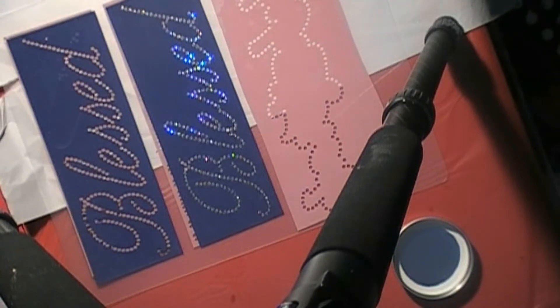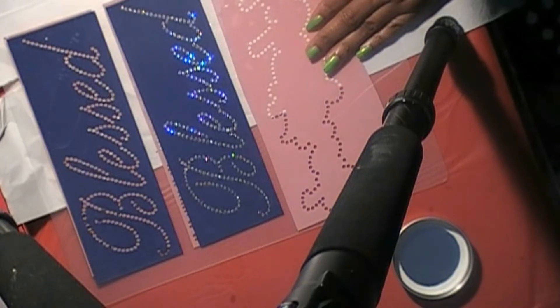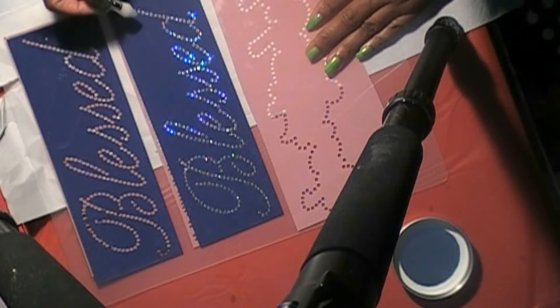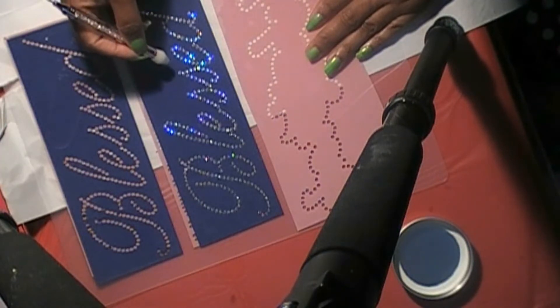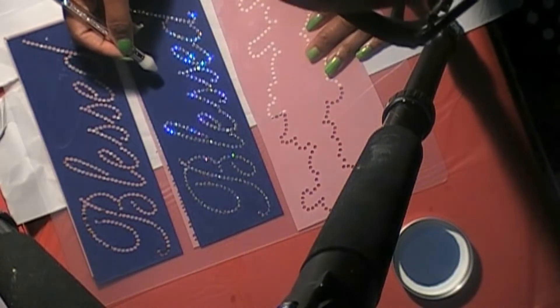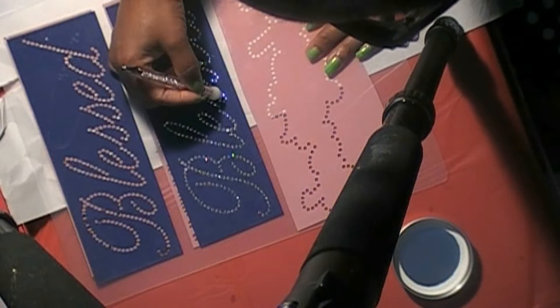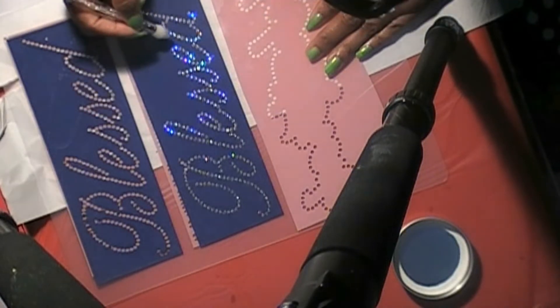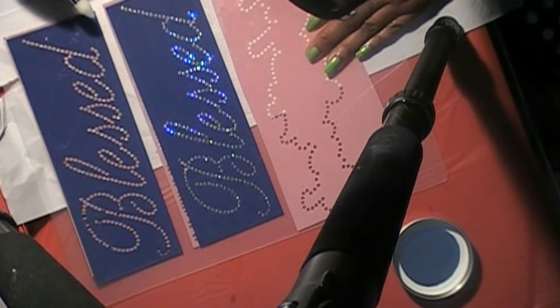That looks pretty good. I think there are about three spots, four spots that I missed. So I'm gonna go over the design and see if I still have any extra ones on the template and there's one right there. I'll pick that up with my rhinestone picker tool and hand place it.